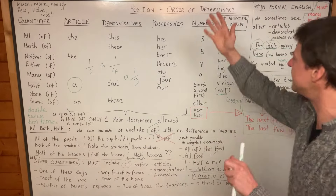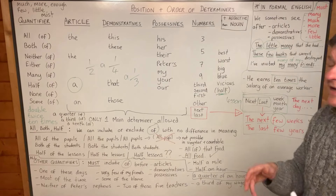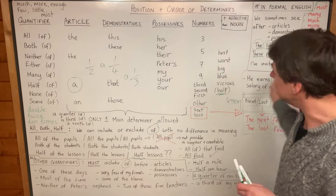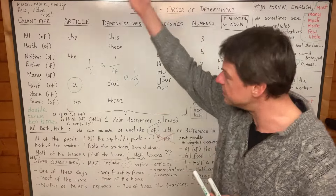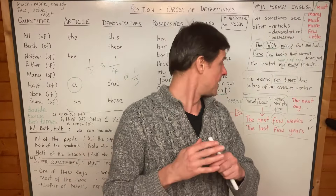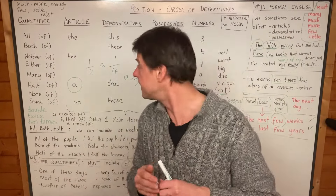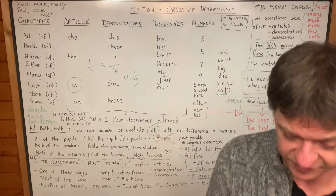So: 'a quarter of an hour' or 'a third of my wages.' I hope that's made the position and the order of determiners a little bit clearer. If any of you have any questions about any of this, please put them in the discussion or in the Q&A, and I'll see you all in the next class.